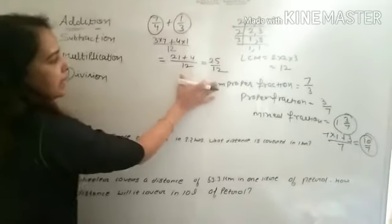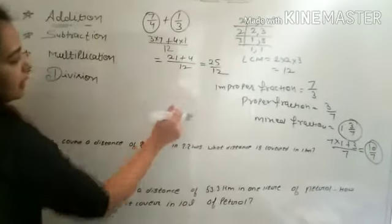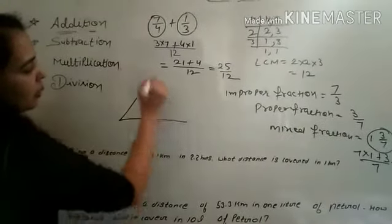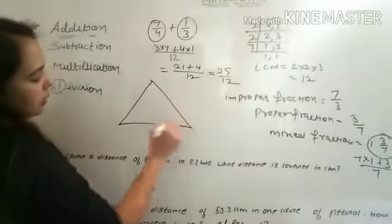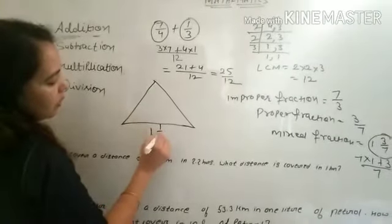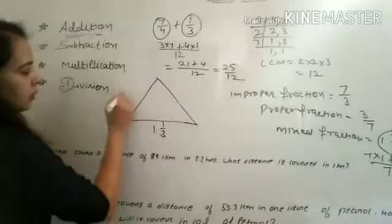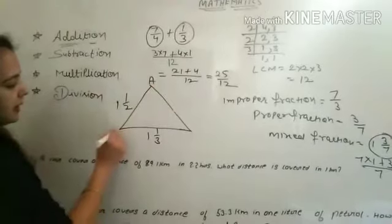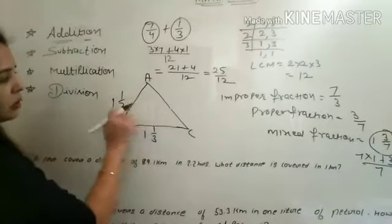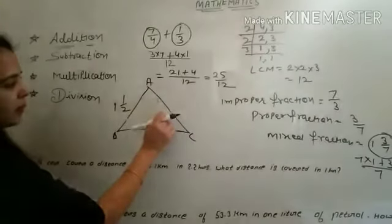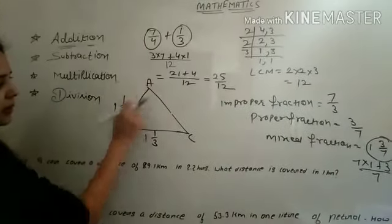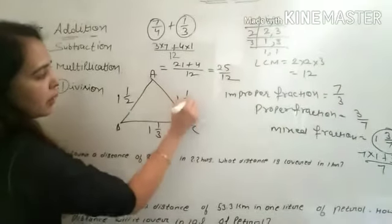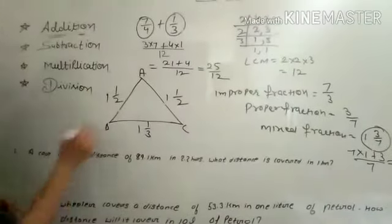Now a statement sum is given: an isosceles triangle has two equal sides. Given that AB equals AC equals 1 and 1/2 cm, and the third side BC is 1 and 1/3 cm. We need to find the perimeter of this isosceles triangle.